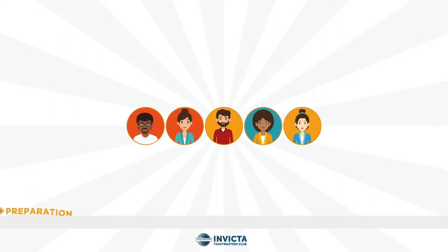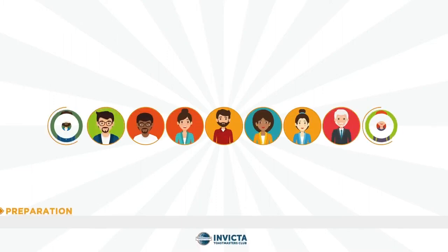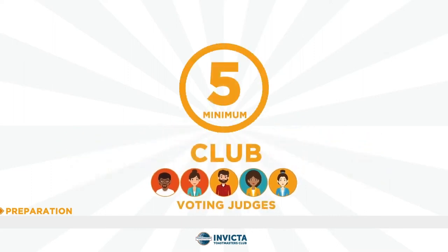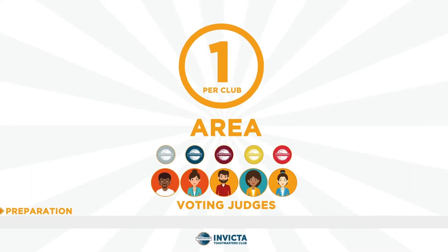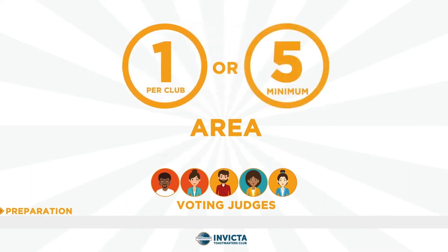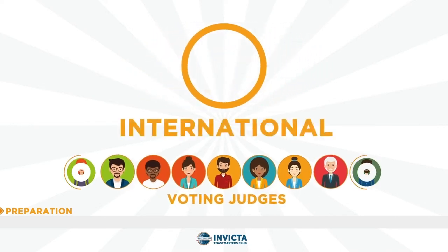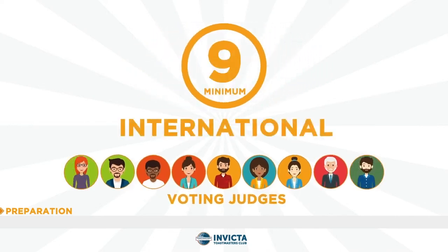Depending on the contest level, the number of voting judges increases and will be as follows: a minimum of five at the club contest level; a minimum of five, or there must be an equal number of voting judges from each club, at the area level; a minimum of seven, or an equal number from each area, at the division level; a minimum of seven, or an equal number from each division, at the district level; and a minimum of nine at the international speech contest.